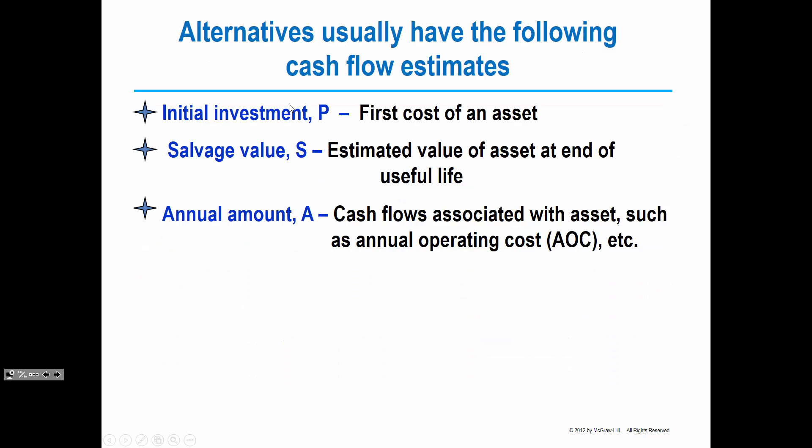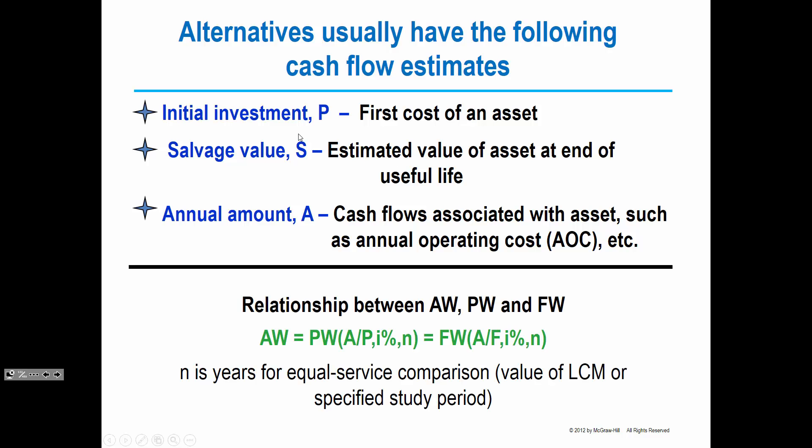The initial investment and salvage value both need to be converted into an annual amount A. The annual worth equals the present worth amount multiplied by the ratio A/P — finding annual worth given a present value for a known interest rate and N. Anything that is a future worth gets multiplied by the ratio A/F. You can get those factors from the table or use equations to calculate your own factor.